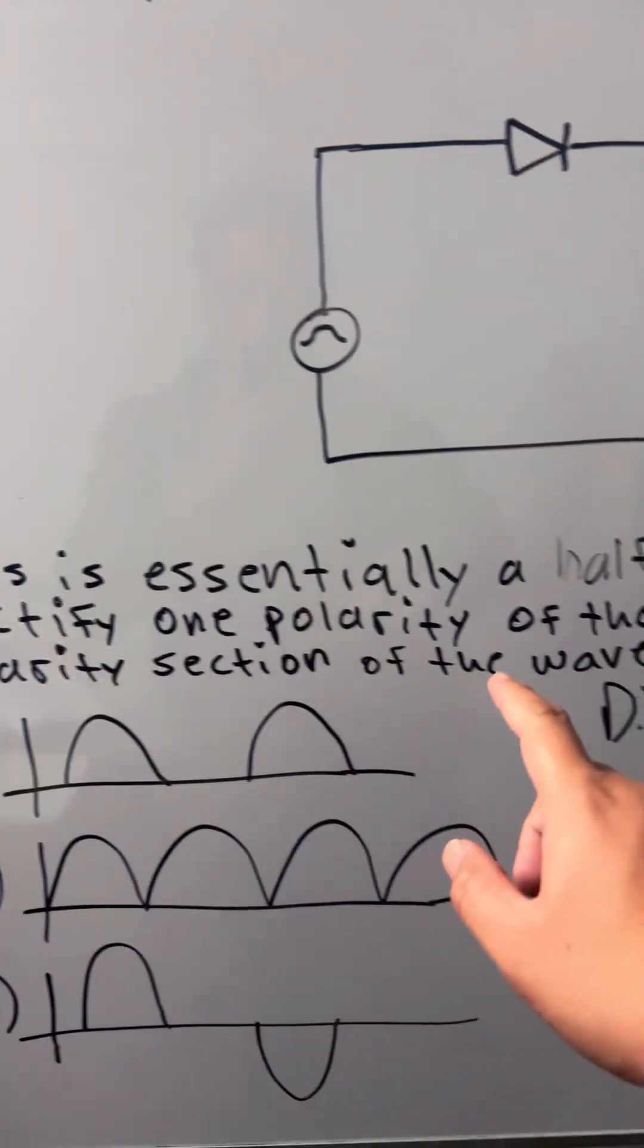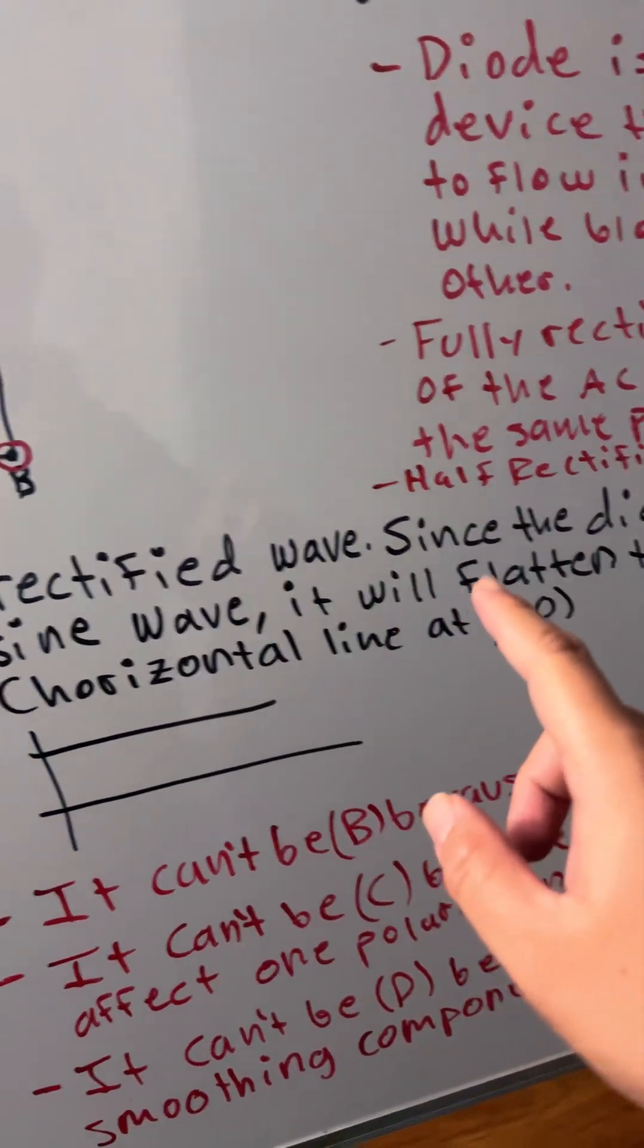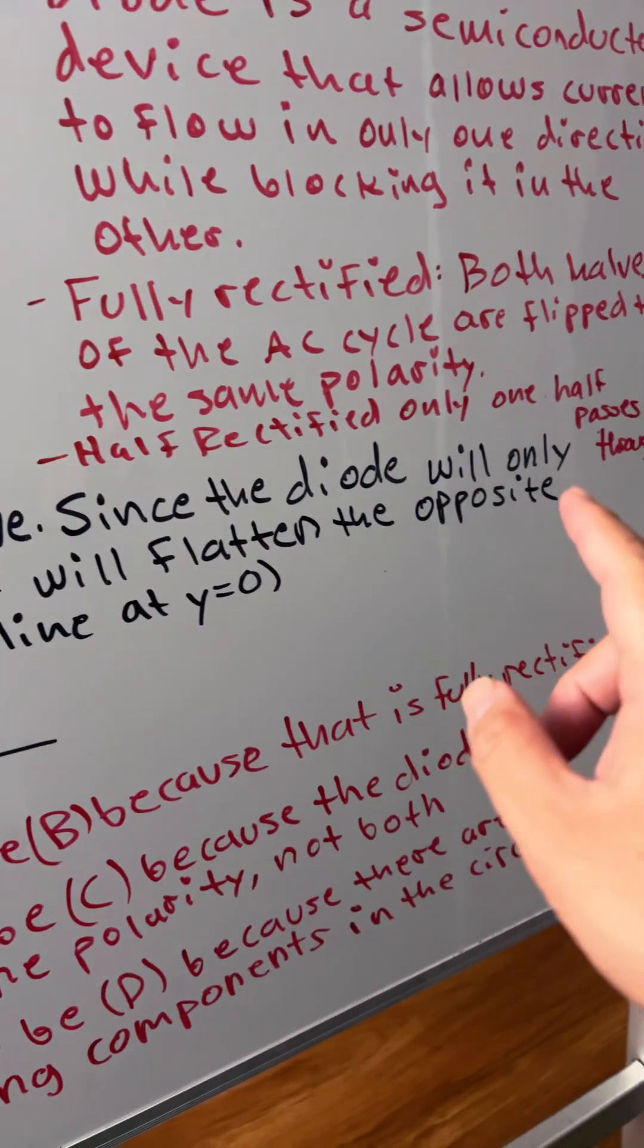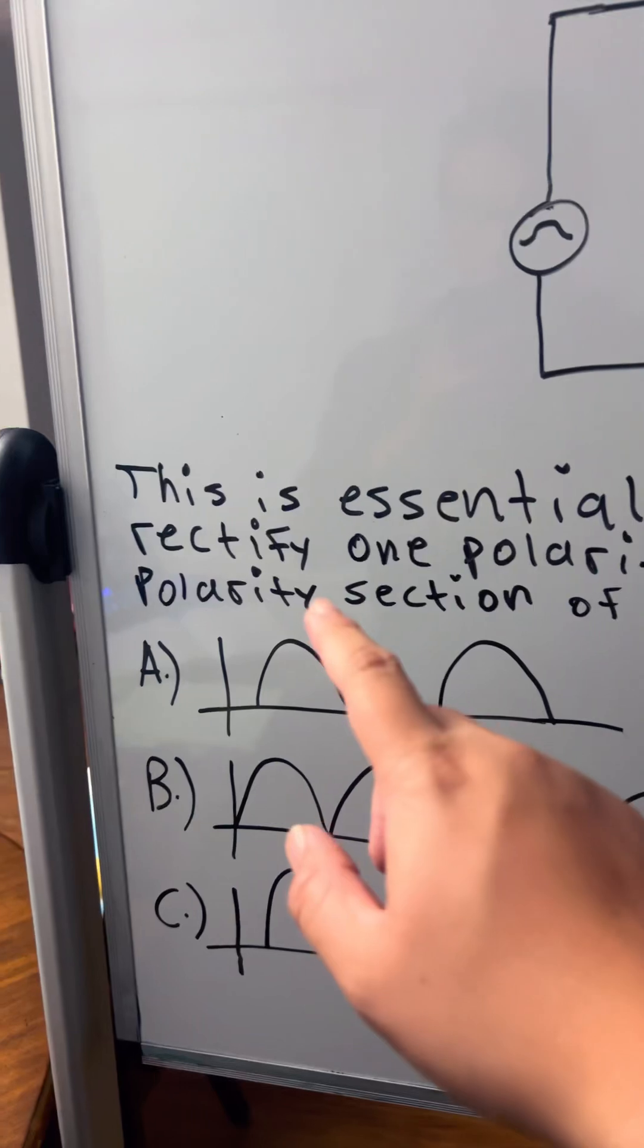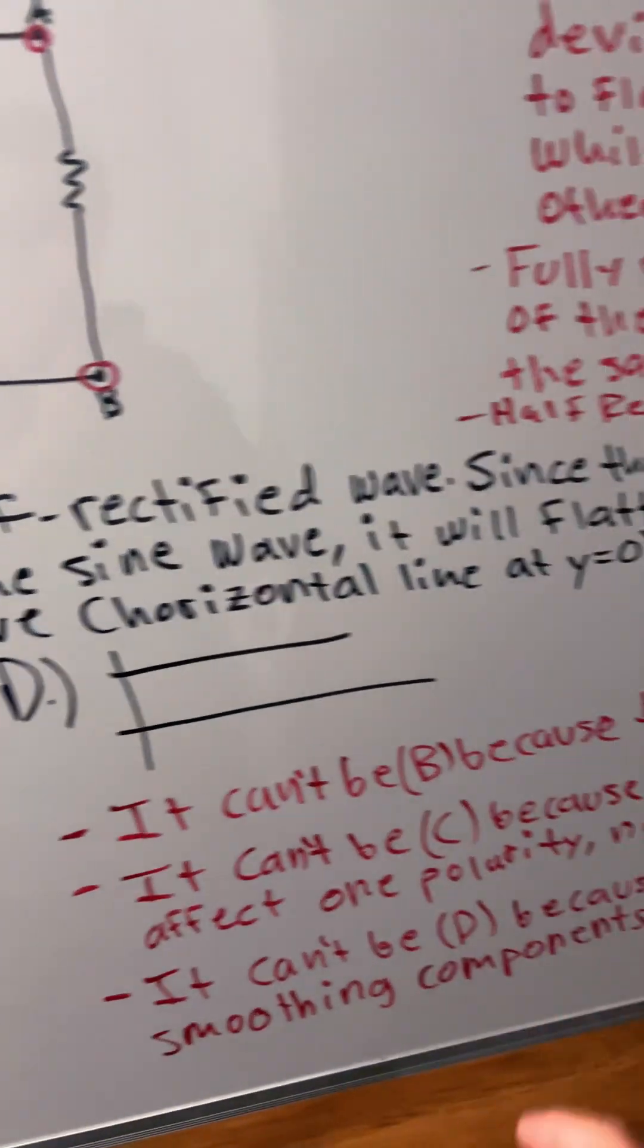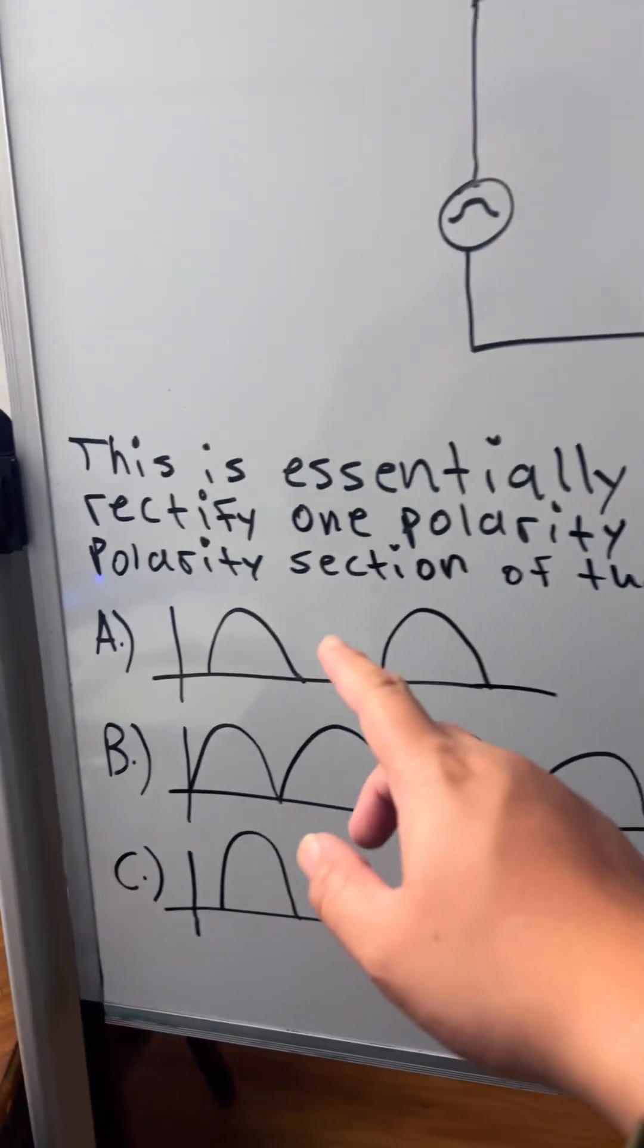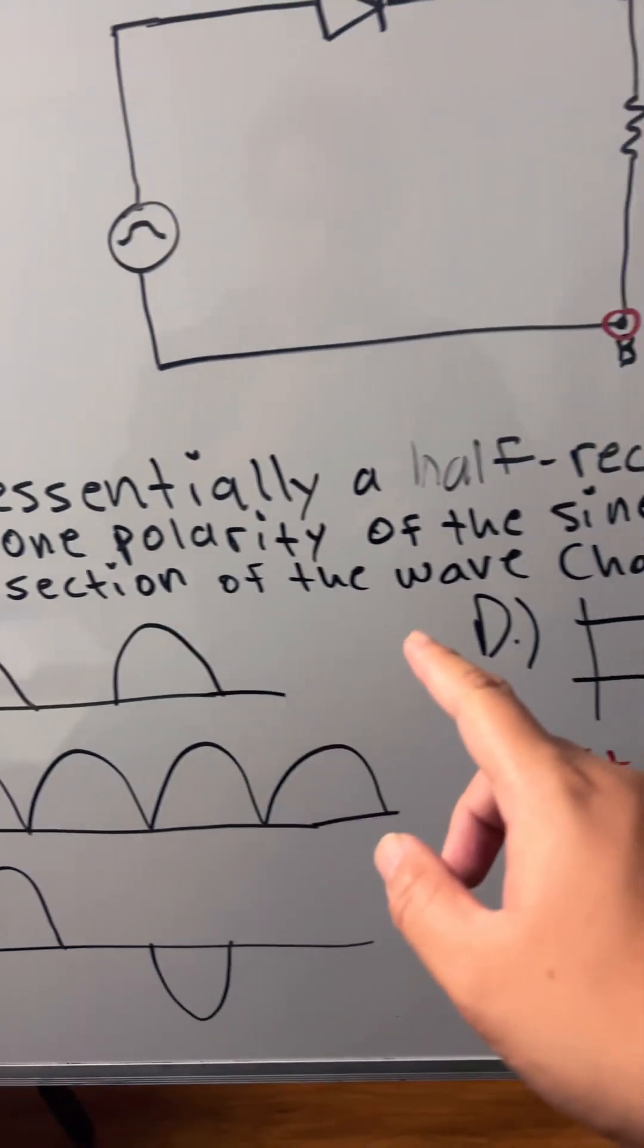For this problem, this is essentially a half rectified wave since the diode would only rectify one polarity of the sine wave. It will flatten the opposite polarity section of the wave.